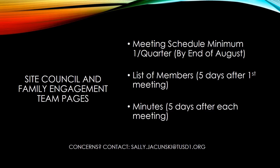Perhaps the biggest new court-mandated requirement is making the site council and family engagement team schedules, minutes, and lists of members available on every school website. To facilitate this, we placed pages for both groups on every site's family tab over the summer with modules that contain the necessary information. Any existing pages already containing this information were moved to the new location. It is important that both groups have a minimum of one meeting per quarter, and all four meetings need to be added to the school website calendar by September 5th under the category of Site Council or Family Engagement Team. If both groups meet together, a calendar entry still must be made for each group separately, for a total of eight meetings on the school website calendar.